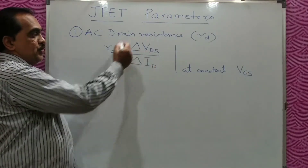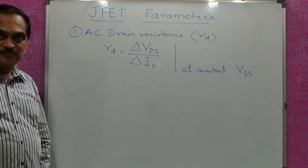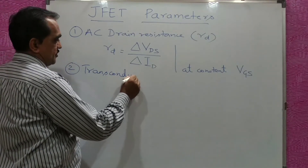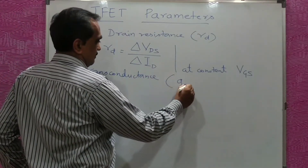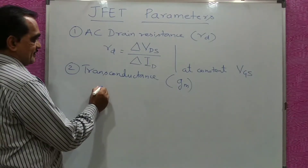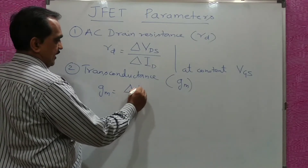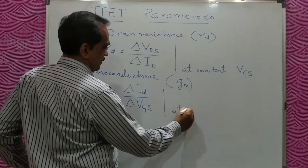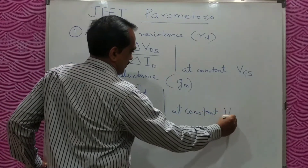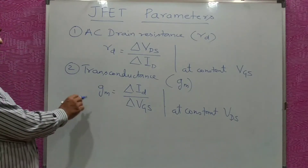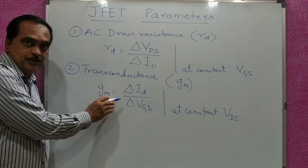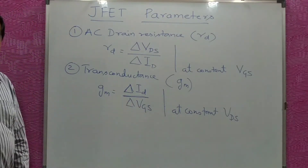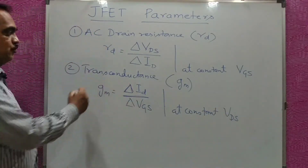The second parameter is transconductance, denoted as Gm. Gm is equal to delta ID upon delta VGS at constant VDS. Transconductance is the ratio of change in output current to change in input voltage — delta ID upon delta VGS at constant output voltage. This tells you how, if you change the input voltage, the output current changes.